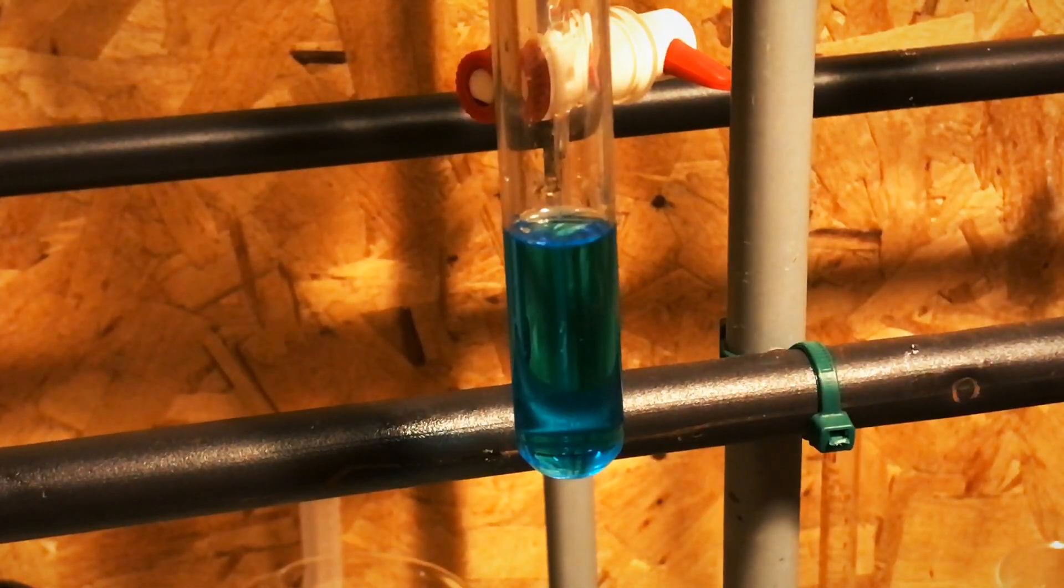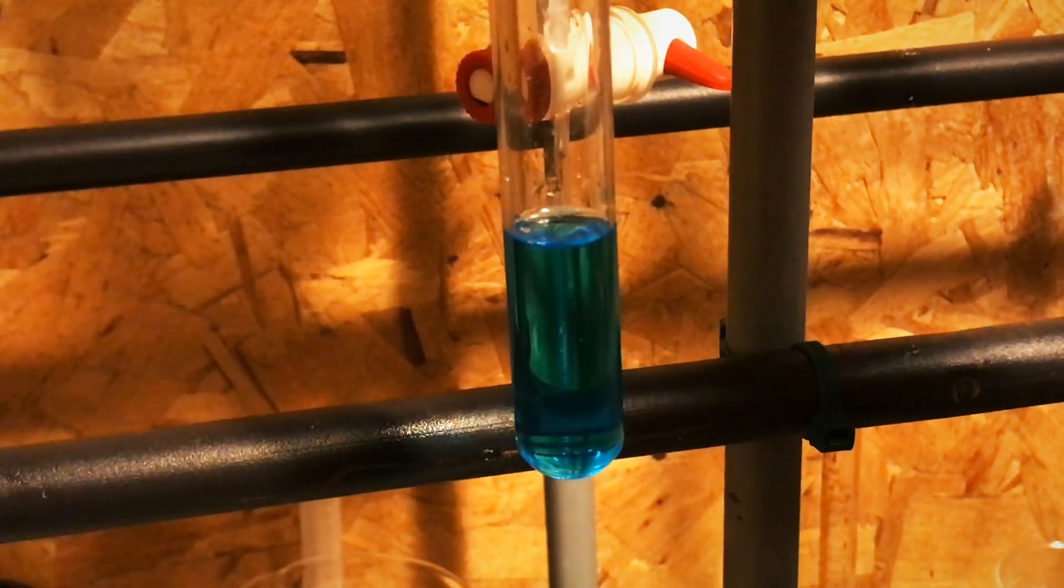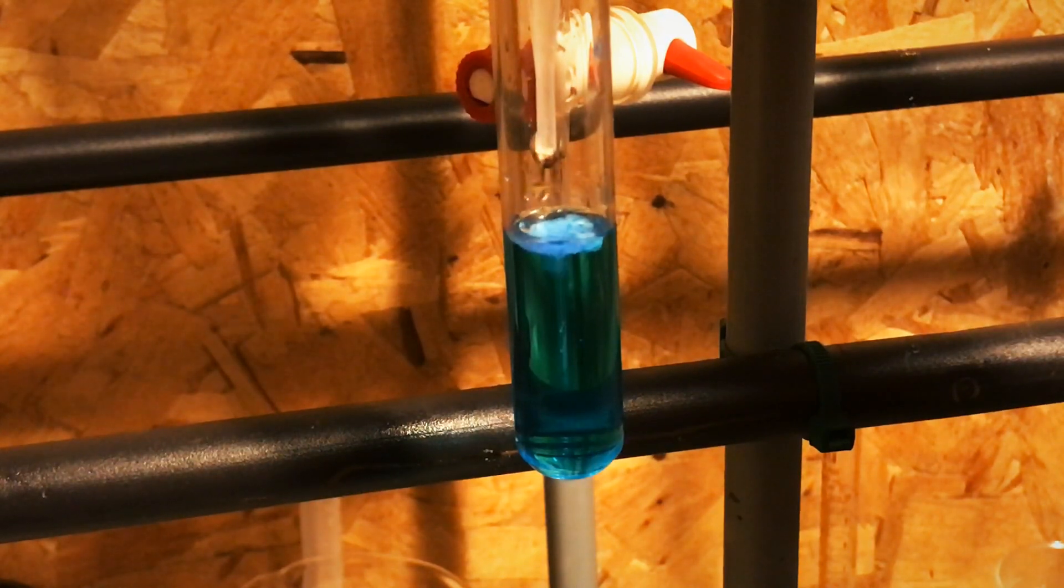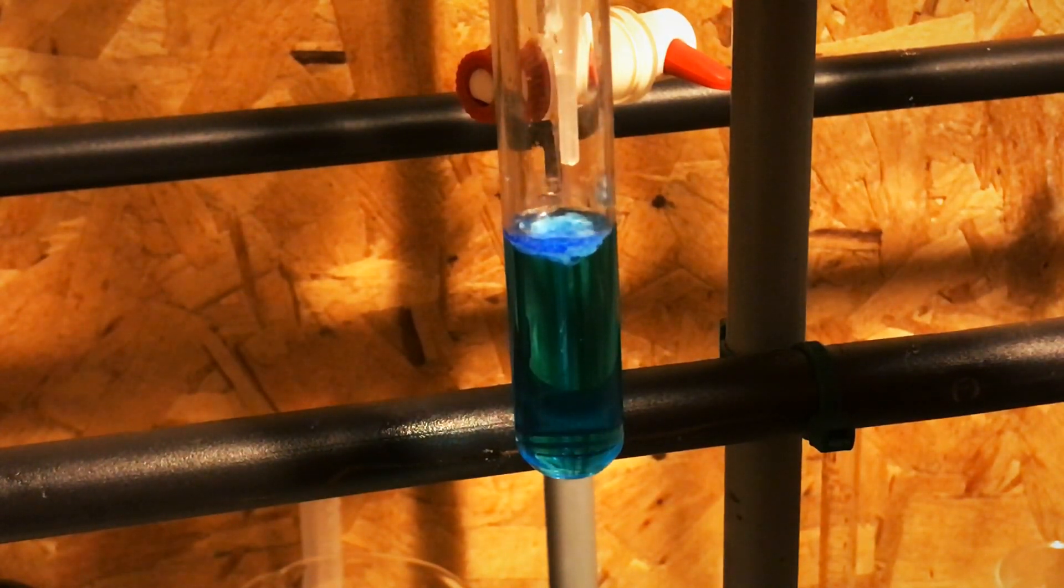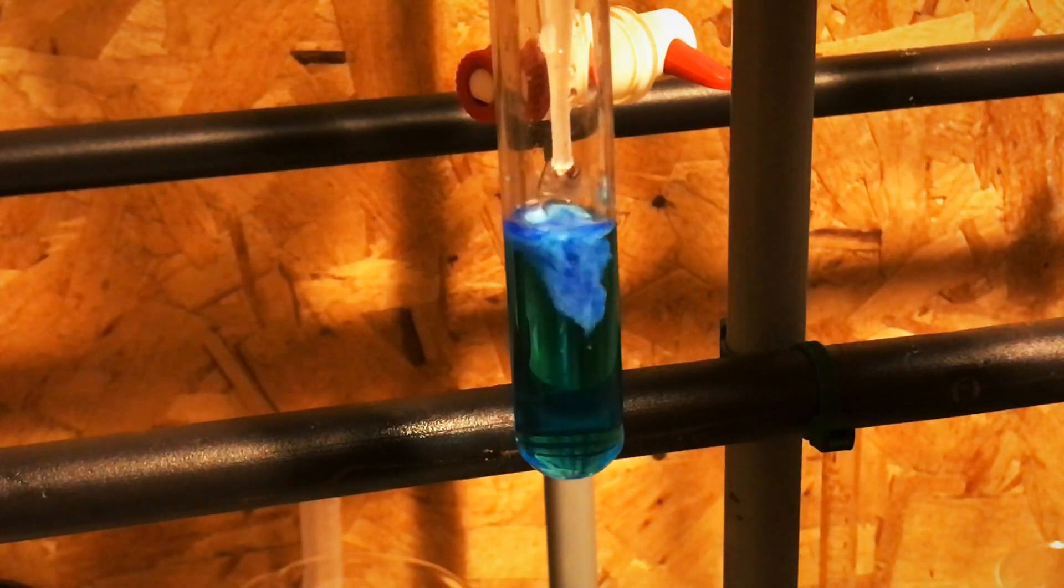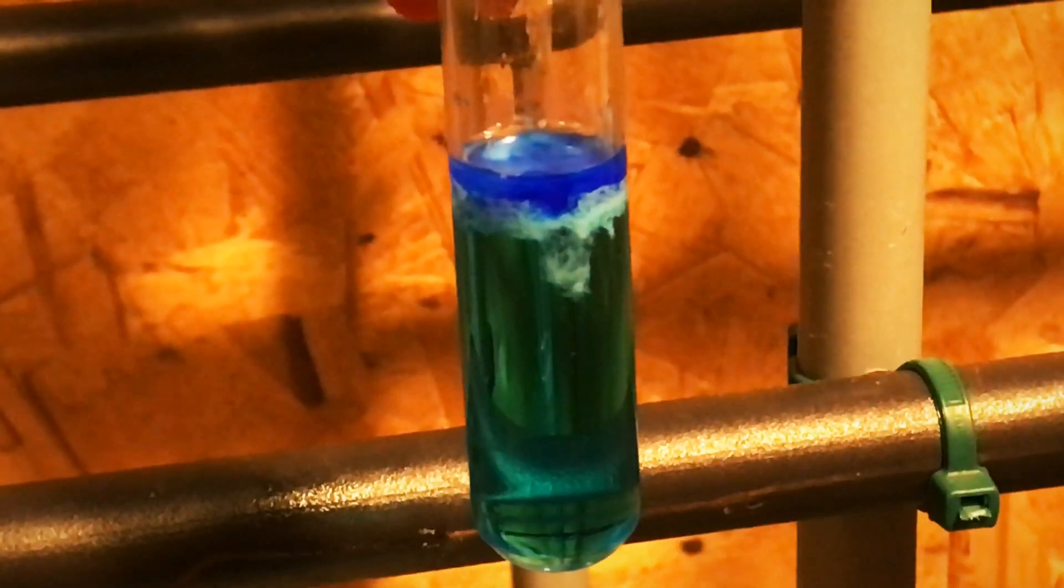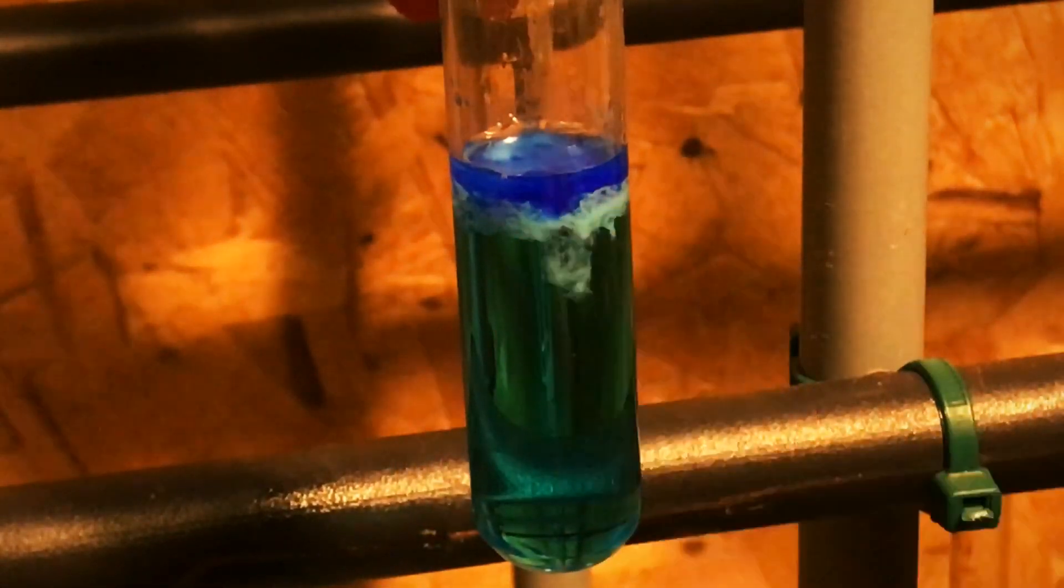Next, I'm going to add some ammonium hydroxide to the copper sulfate. You immediately see the formation of copper hydroxide. Okay, so that pale blue color you see here, this precipitate is copper hydroxide.